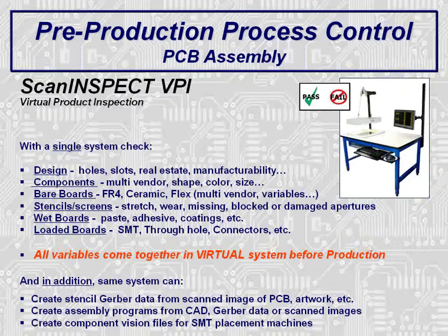With a single system, you can check virtually any stage of production. Check designs for manufacturability, including holes, slots, etc. Components can be checked to make sure there are no issues once production starts — no more problems due to differences in parts from multiple vendors. PCBs can be inspected versus Gerber data or even versus the stencil. Make sure the stencil and PCB match. Inspect stencils either incoming or after cleaning to check for blocked apertures, damage, or stretch. Inspect pasted boards or perform first-article inspection of populated PCBs. The software has many layers, so you can overlay all steps of a process to ensure all variables come together properly.